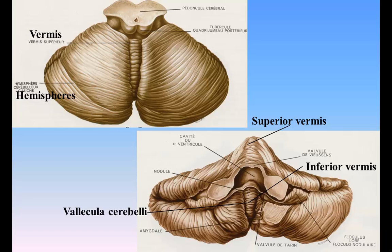Lobes of the Cerebellum. The cerebellum consists of three parts: a median and two lateral, which are continuous with each other and are substantially the same in structure. The median portion is constricted and is called the vermis, from its annulated appearance which it owes to the transverse ridges and furrows upon it. The lateral expanded portions are named the hemispheres. On the upper surface of the cerebellum, the vermis is elevated above the level of the hemisphere, but on the undersurface, it is sunk almost out of sight in the bottom of a deep depression between them. This depression is called the vallecula cerebellae and lodges the posterior part of the medulla oblongata.